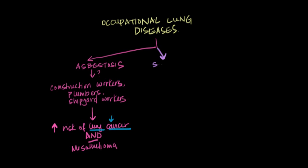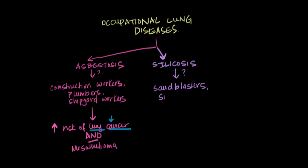The second occupational lung disease is silicosis, caused by exposure to silica. Silicosis can be seen in sandblasters and also in silica miners.